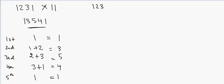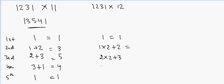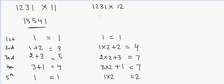Now 1, 2, 3, 1 multiplied by 12. We have: 1, then 1 times 2 plus 2 gives 4, then 2 times 2 plus 3 gives 7, then 3 times 2 plus 1 gives 7, and finally 1 times 2 gives 2. So the answer is 1, 4, 7, 7, 2.